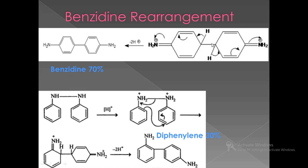After the 5,5-sigmatropic rearrangement, the two hydrogens present in the benzene ring are lost as 2H⁺ (protons). A sequence of bond shifting then takes place in the compound to give the stable product benzidine as the major product — almost 70% benzidine is obtained. Another product obtained in this reaction is diphenyline, which is a minor product; at most 30% of this product is obtained.